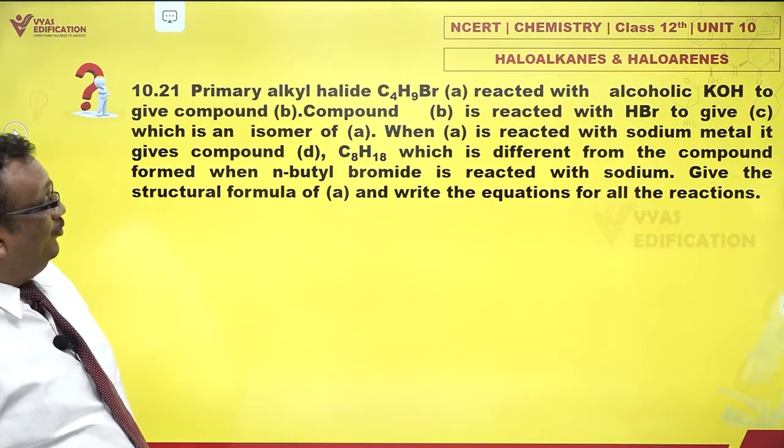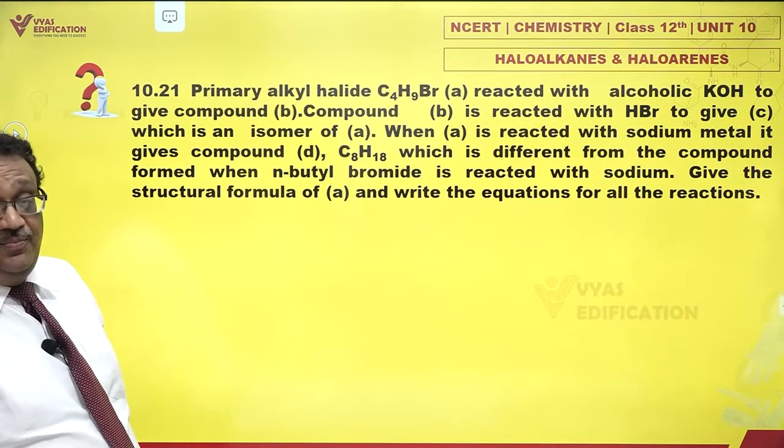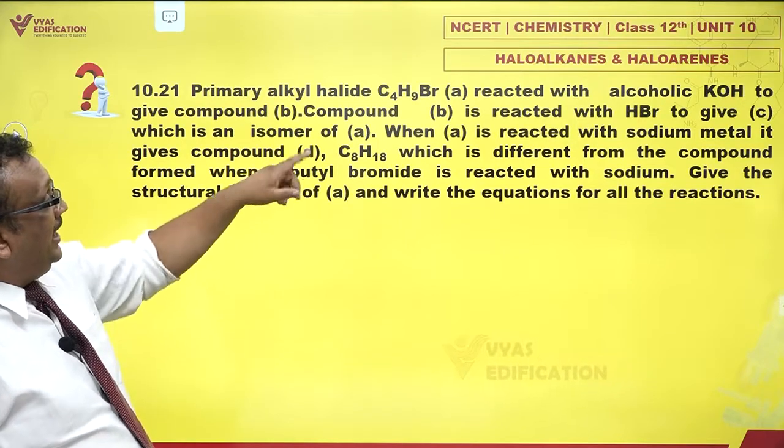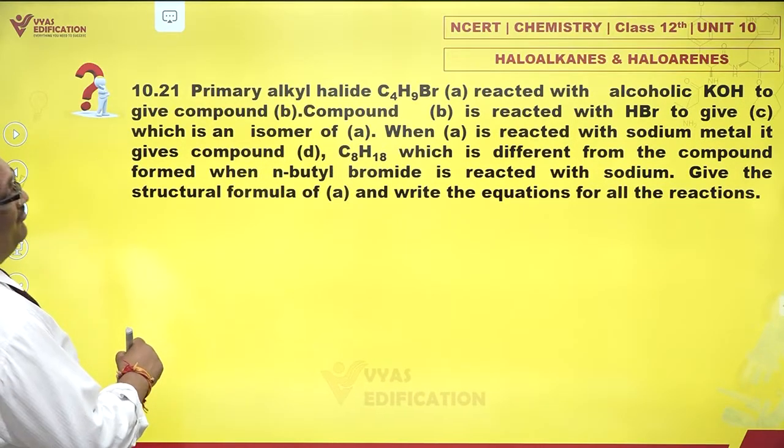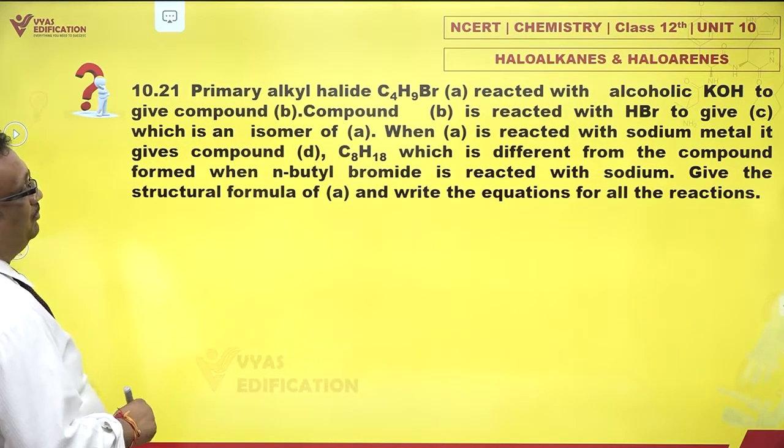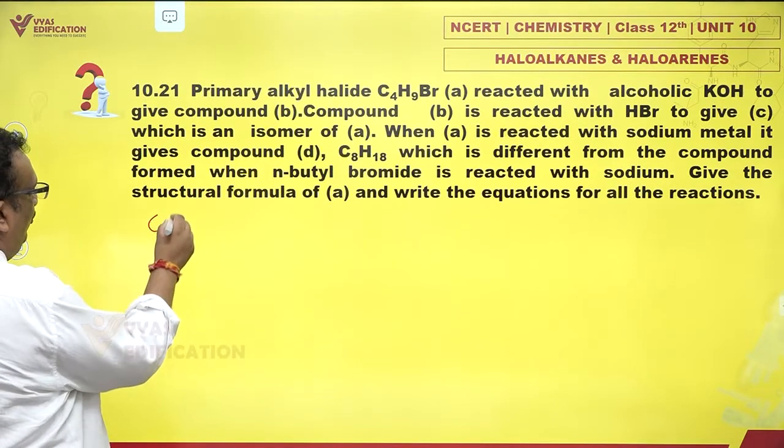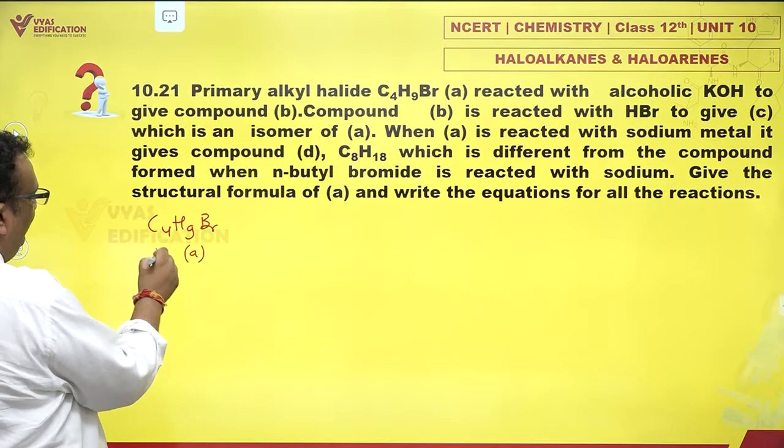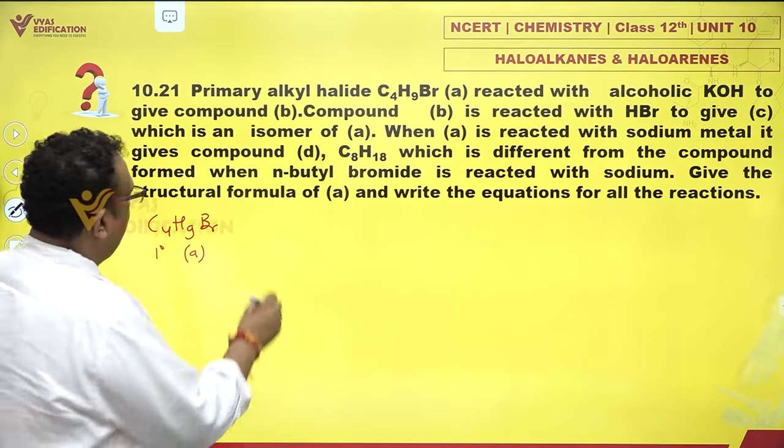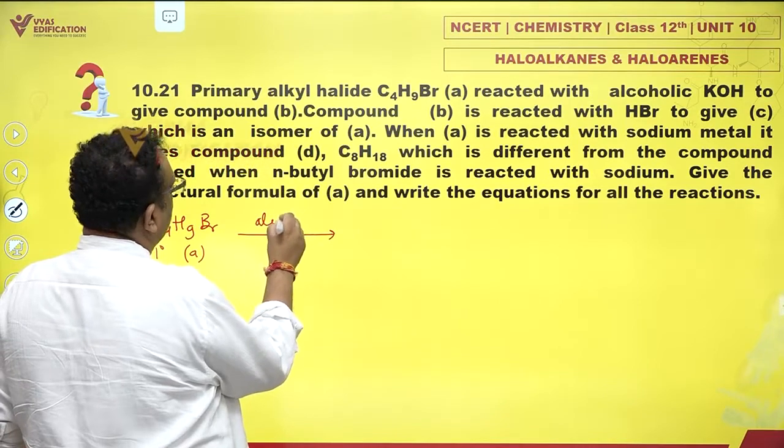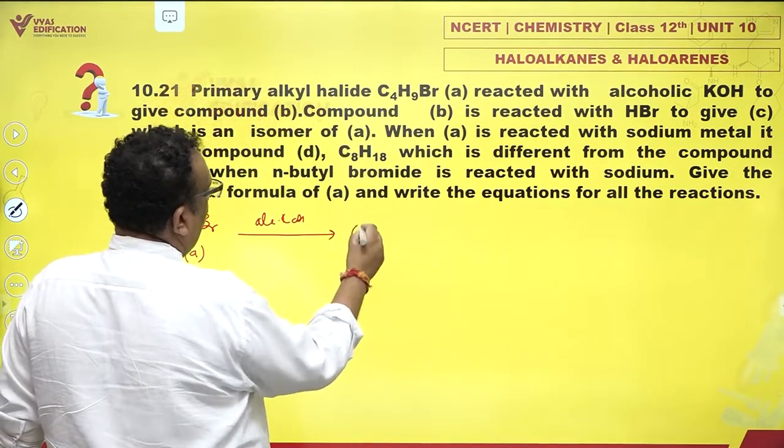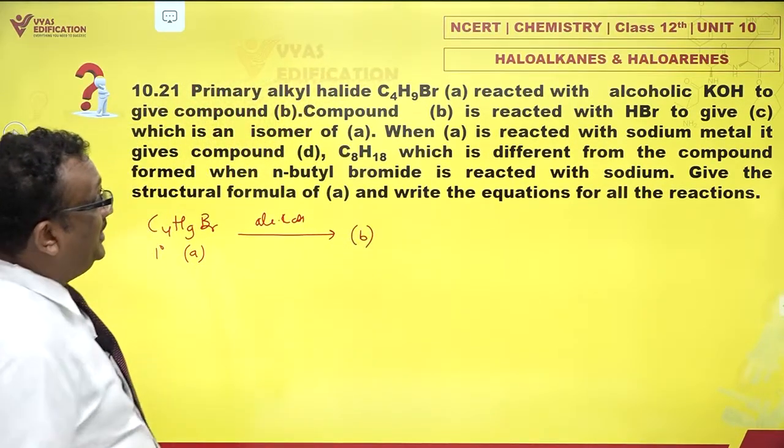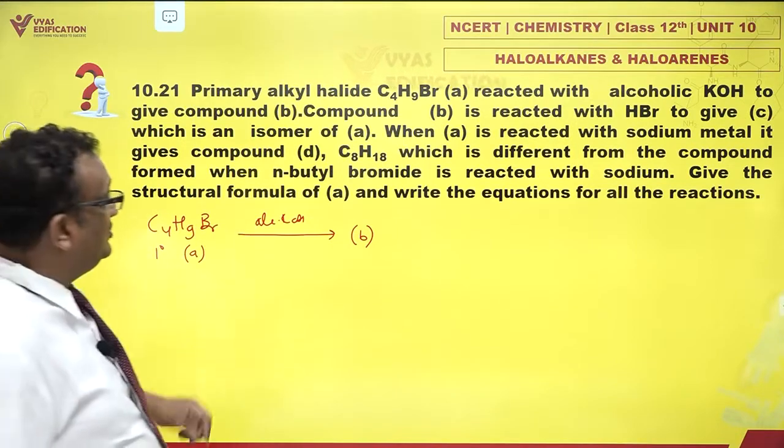Primary alkyl halide C4H9Br, please note it is primary, reacted with alcoholic KOH to give a compound B. Now C4H9Br (A), which is primary, reacts with alcoholic KOH to give a compound B. When B is reacted with HBr, it gives C.